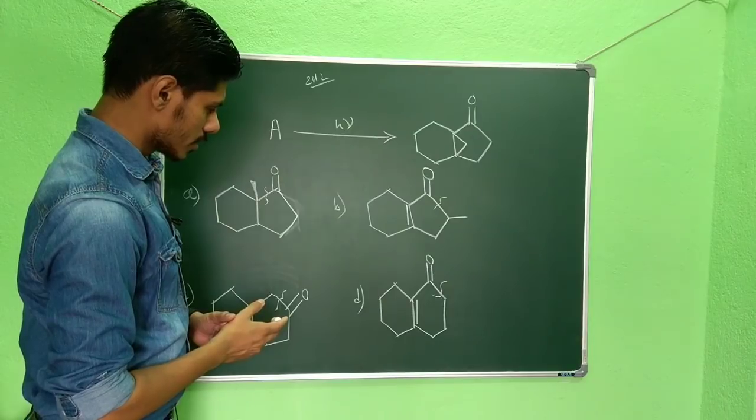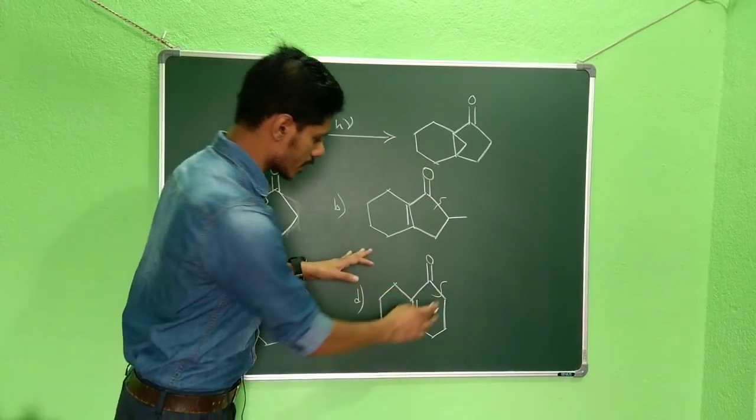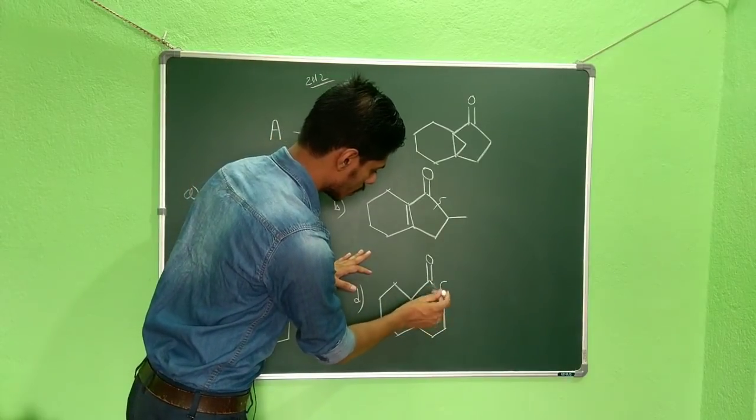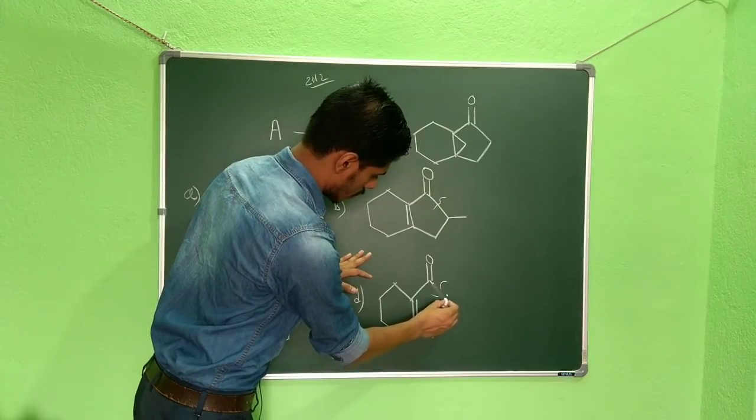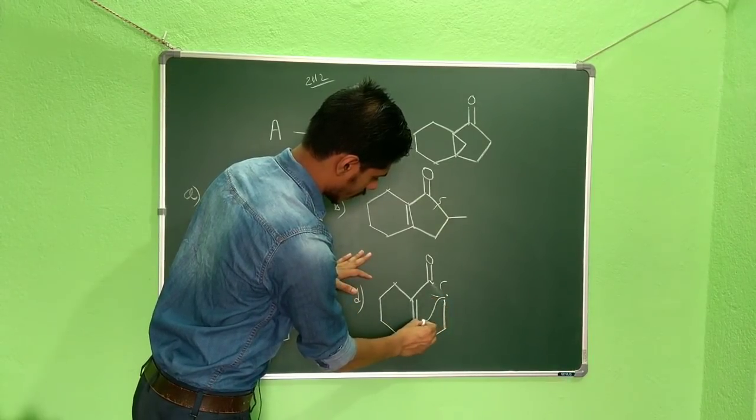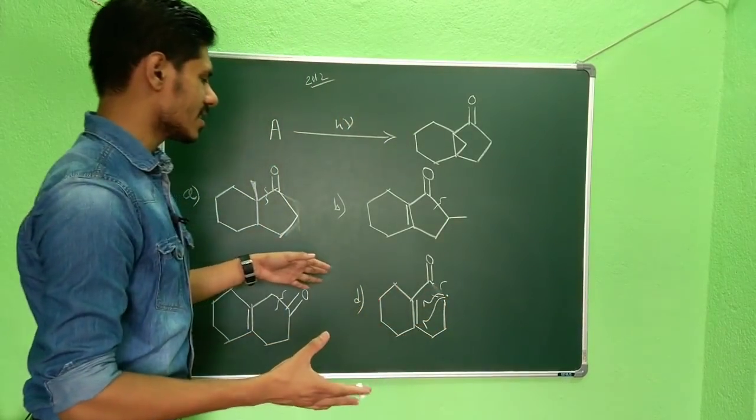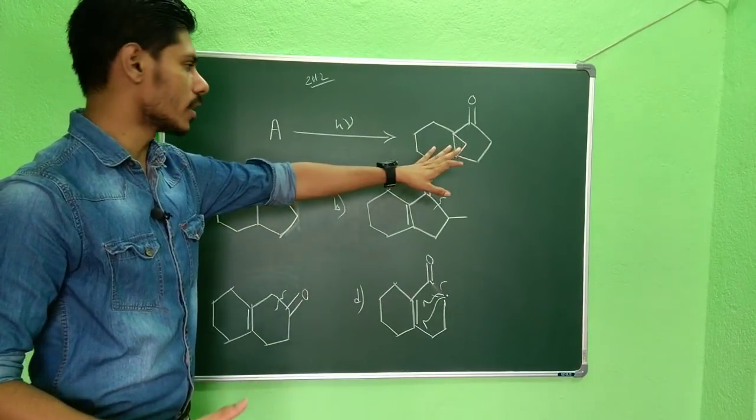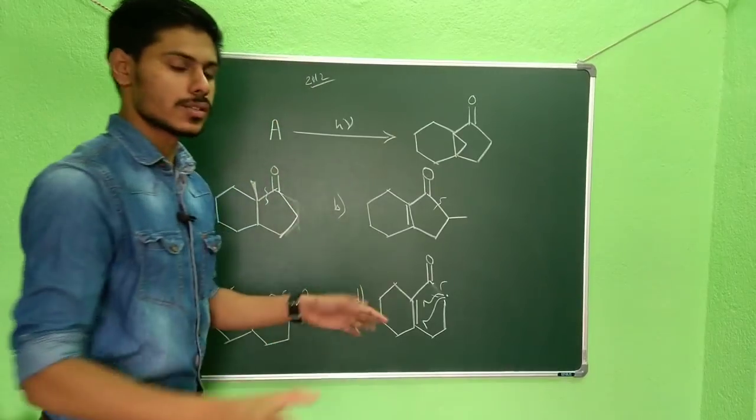Now here is the case. You can see if it breaks from here, so what you will get? You will get one dot over here, one dot over here. Now this dot can either attack here or it can attack here, and in both cases you are not getting this product. So this D option is ruled out.